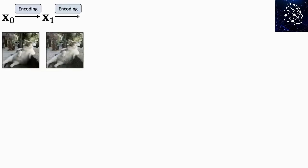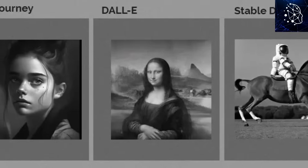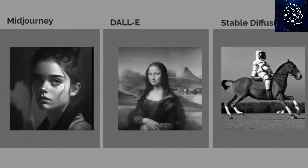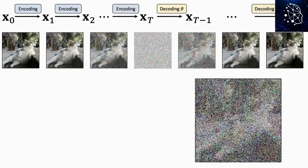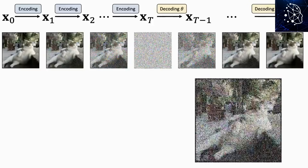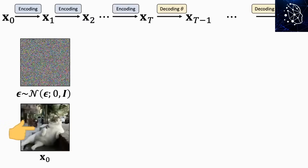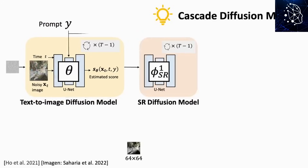Sora operates as a diffusion model, similar to text-to-image generative AI models like DALL-E 3, Stable Diffusion, and Midjourney. Being a diffusion model means that once you prompt Sora, it starts by generating each image frame for the video. Then, with powerful machine learning, it transforms the group of image frames into something that resembles your prompt. But here's where Sora stands out from other diffusion AI models.